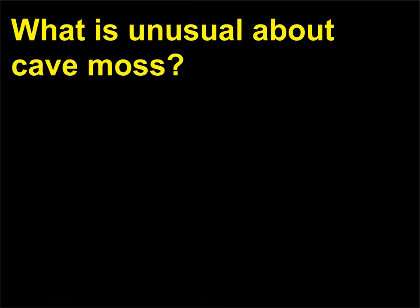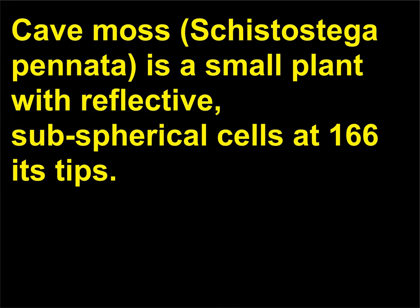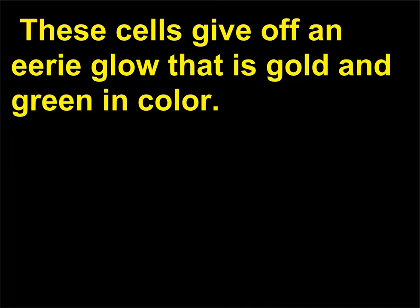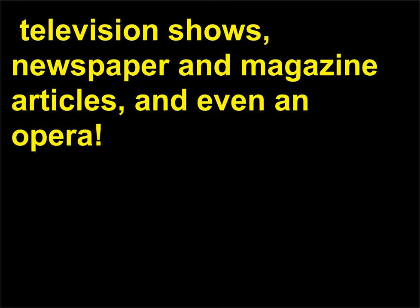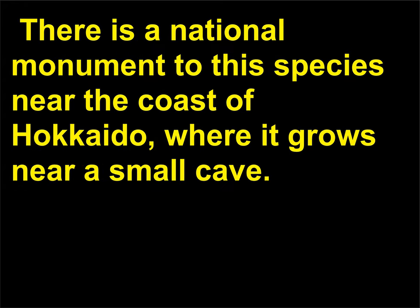What is unusual about cave moss? Cave moss, Schistostega pennata, is a small plant with reflective, subspherical cells at its tips. These cells give off an eerie glow that is gold and green in color. In Japan the plant has been the subject of numerous books, television shows, newspaper and magazine articles, and even an opera. There is a national monument to this species near the coast of Hokkaido, where it grows near a small cave.